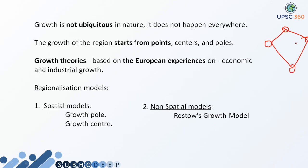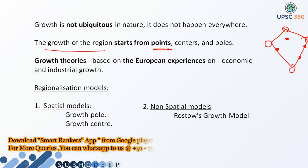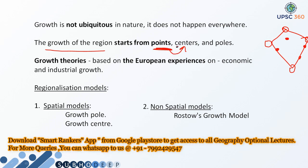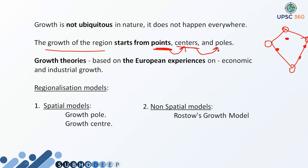So, it is being said that growth, if it occurs, then it starts from a point. Like in India, there are few regions which are very much forward in growth, like Delhi, like Mumbai, like Chennai and Kolkata. It is being said that the growth of any region starts first from a point, then it becomes a growth center, then it becomes a growth pole.